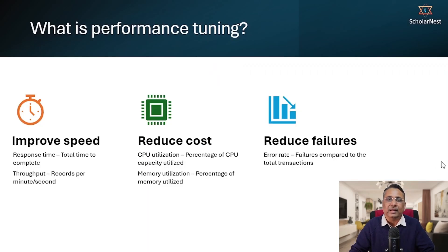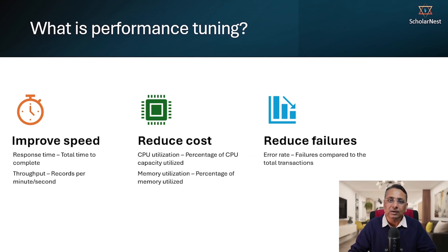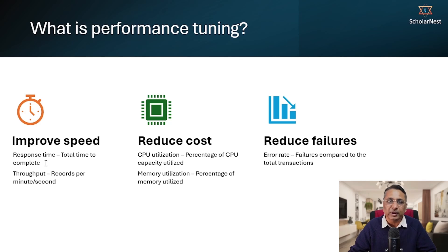In an earlier lecture, I talked about three performance tuning goals: improve the speed, reduce the cost, or reduce the failure rate. The point is, which one do you target? Do you want to improve the speed, reduce the cost, or minimize or eliminate the failures? That's a tough question.